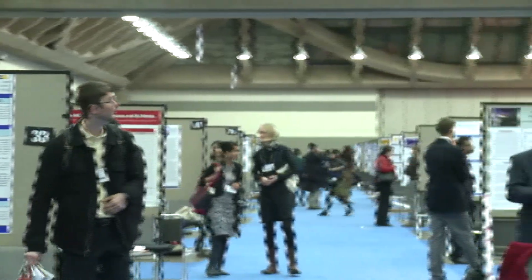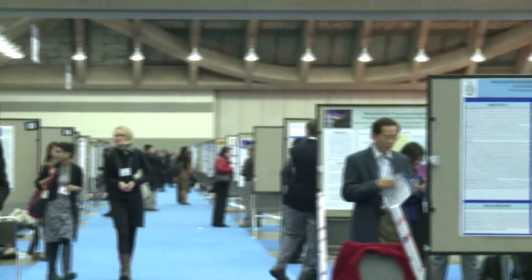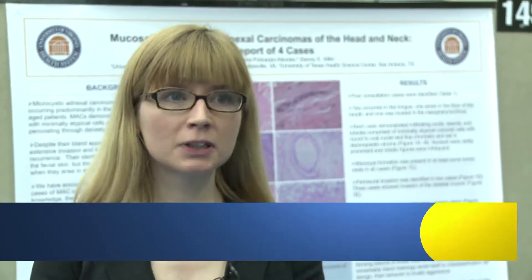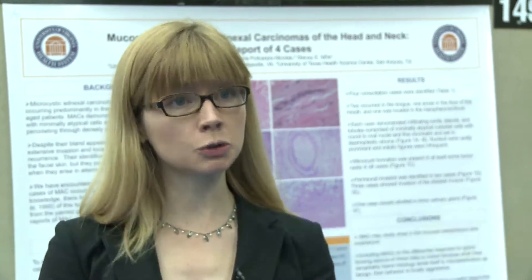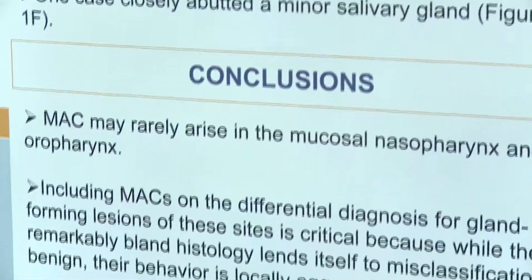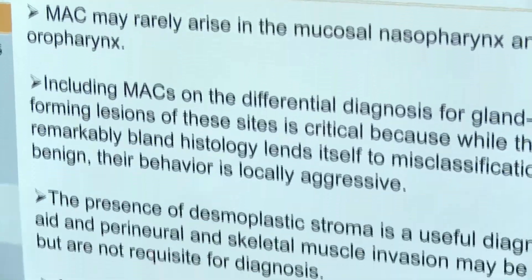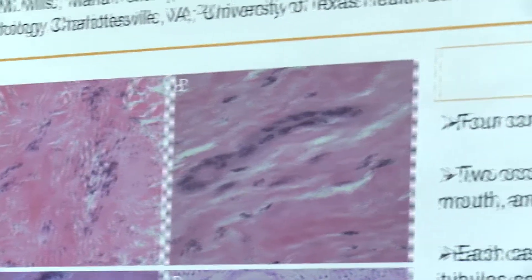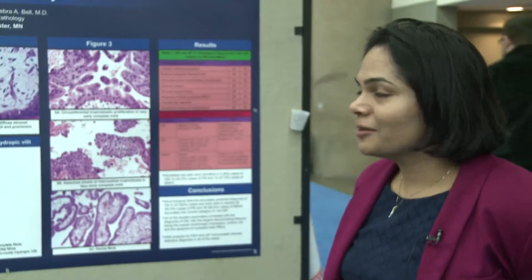I'm presenting a poster from work done at the University of Virginia. This poster is a series of cases of microcystic adnexal carcinoma, which is a tumor very well described in the skin, and we're presenting cases of it occurring in the mucosal surfaces of the head and neck.